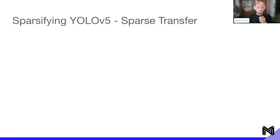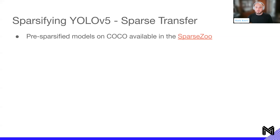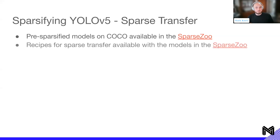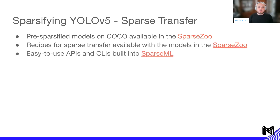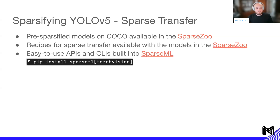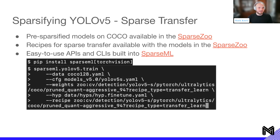What does this look like to apply through Neural Magic? We have pre-sparsified models on COCO available in the SparseZoo — our model and recipe repository. We also have easy-to-use APIs and CLIs built into SparseML, built on top of the Ultralytics package. You can do pip install sparseml and then run a training command on YOLO v5 with the COCO 128 dataset, telling it to pull weights from the SparseZoo and provide a transfer recipe, which will keep the sparse architecture intact while you're training.